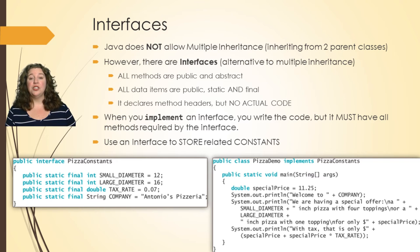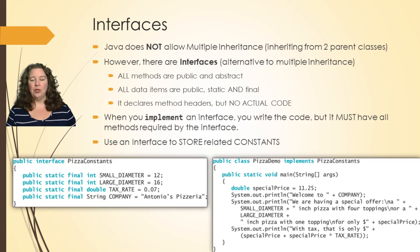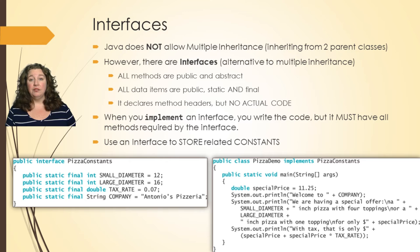You can also use an interface to store related constants like our pizza constants. It's great to reference those constants from another file because that file is compiled and sitting on the side — you can use it anytime you want. So it's nice to store your constants, especially if there are more than a few, in a separate file. You are going to be implementing an interface in your code for the homework, so make sure you understand that.